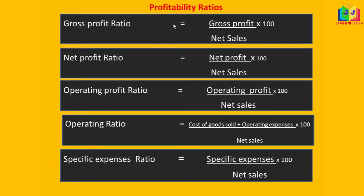These are the formulas under profitability ratios. Gross profit ratio is gross profit divided by net sales into 100. Net profit ratio is net profit divided by net sales into 100. Operating profit ratio is operating profit divided by net sales into 100. Operating ratio is cost of goods sold plus operating expenses divided by net sales into 100.